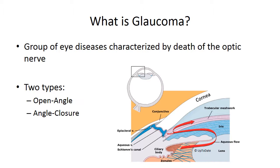In primary open-angle glaucoma, the optic nerve becomes damaged for unknown reasons. Presumably, degeneration of the aqueous humor outflow pathway — probably the trabecular meshwork — leads to aqueous backup and chronically elevated intraocular pressure. Over time, the ganglion nerves in the retina will atrophy. Patients experience peripheral visual field loss, which usually occurs so gradually that it is asymptomatic in the early stages.